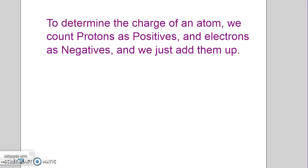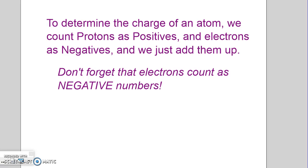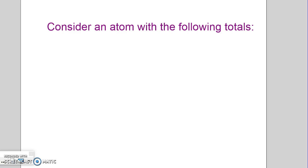So how do we consider them? Well to determine the charge of an atom, we count protons as positives, electrons are negatives, and all we do is add them up. When we add them up, we need to be really careful to remember to count the electrons because they are negatively charged as negative numbers.